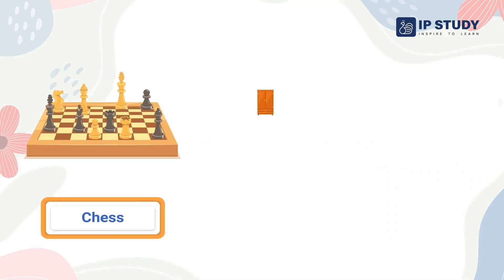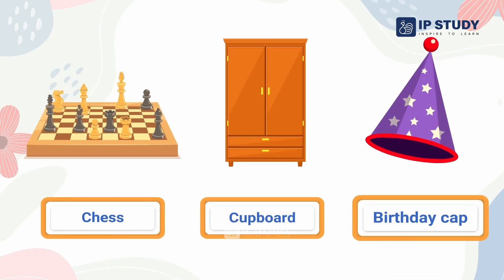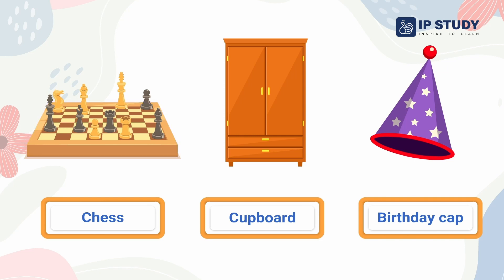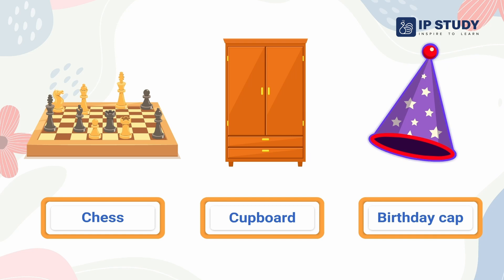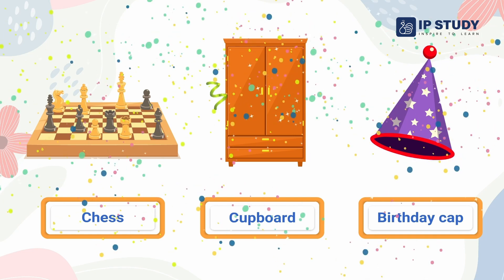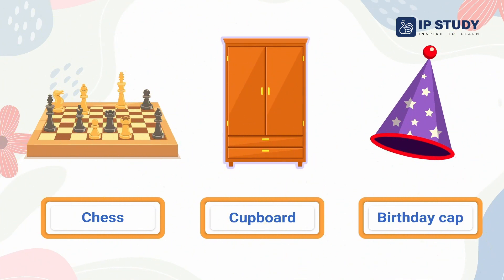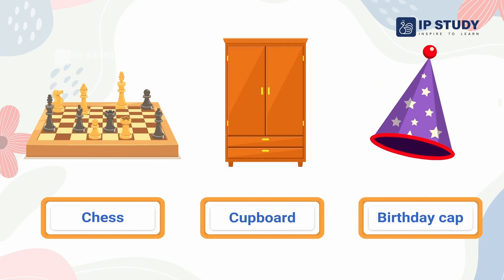Now can you tell me, in these shapes, which shape is rectangle? A chess, a cupboard, a birthday cap. That's right! The cupboard shape is in rectangle.